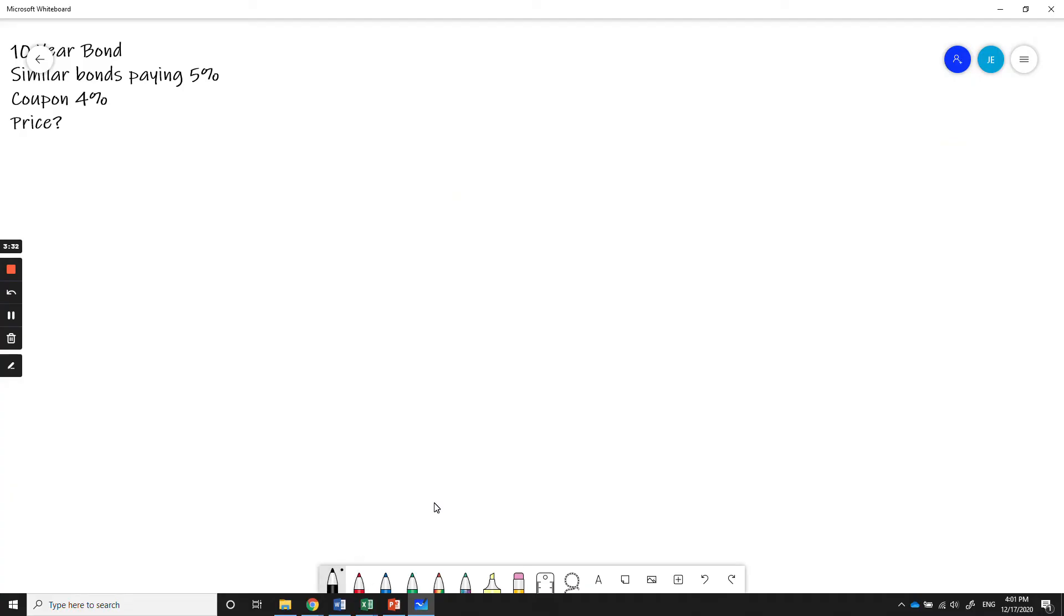So let's look at an example to help us understand. So we've got a ten year bond. Similar bonds are paying five percent. This bond has a coupon of four percent. What should we pay for it?